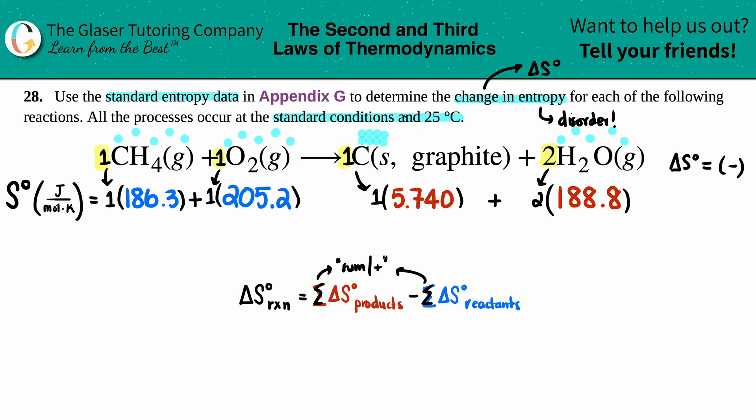Let's tally them up. Let's see what we get. So I get 186.3 plus 205.2. On my reactant side, I get 391.5. And then on my product side, two times 188.8. And then I get plus 5.74. I get 383.34.